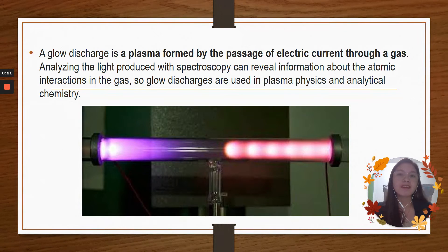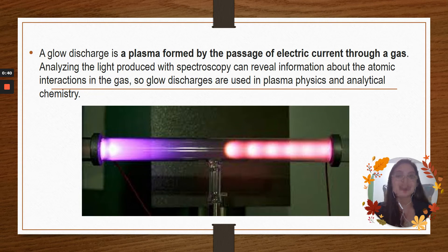A glow discharge is a plasma formed by the passage of electric current through a gas. Analyzing the light produced with spectroscopy can reveal information about the atomic interactions in the gas. So glow discharges are used in plasma physics and analytical chemistry.